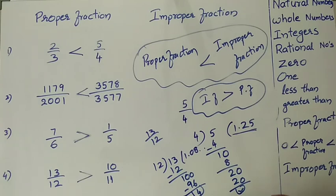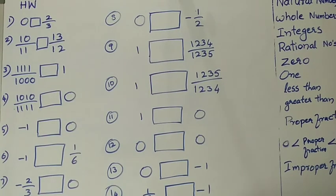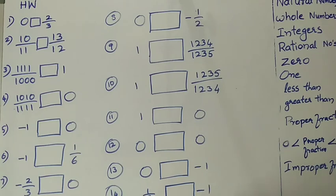Dear children, here I have given homework problems — questions 1 to 14. With different logics, you can give the answers. My condition is: without doing any calculation, don't put pen on paper for working. Just give the answer directly by using the properties I explained. If you use the properties, you can easily place the less than or greater than symbol in the given boxes. Some students may feel that the same type of question is given repeatedly — but notice that the answers are changing. Remember that, and complete this homework. Thank you, and have a nice day.